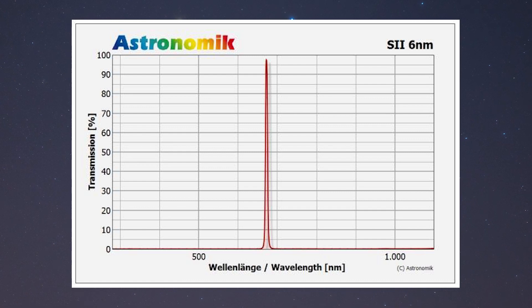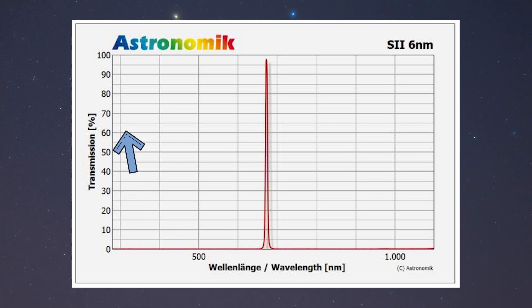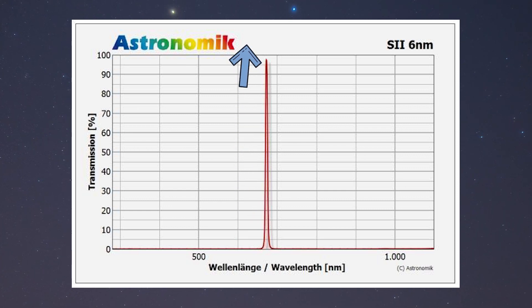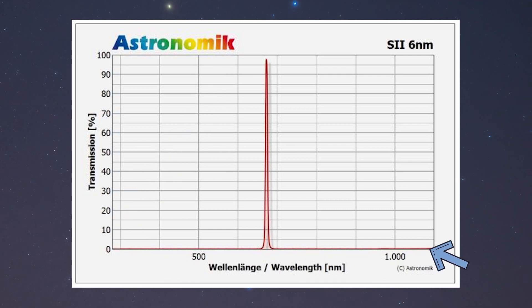To understand what a filter will do to your image we have to get a bit sciency. The light our telescopes collect is made out of many different frequencies or wavelengths. The wavelength of visible light determines its color. When you go online shopping for filters you will most likely see a graph like this — it will tell you what the filter does. On the bottom we have the wavelength of visible light and on the left the transmission of the glass. In this case light with a wavelength of 672 nanometers will pass through the filter and can be detected on our sensor. Almost everything else will be blocked. 672 nanometers is orange-red and your image will look like that, if you have a color camera.